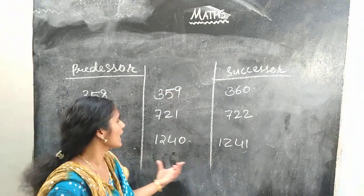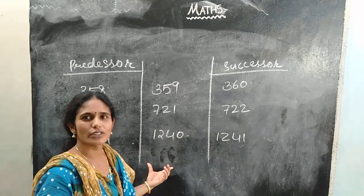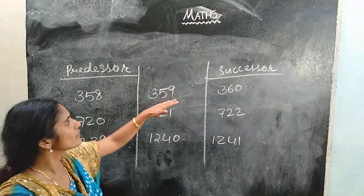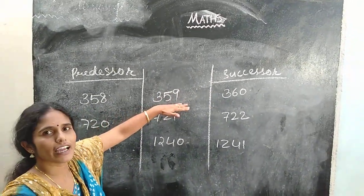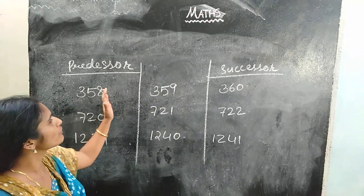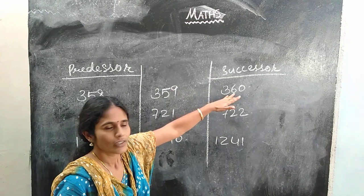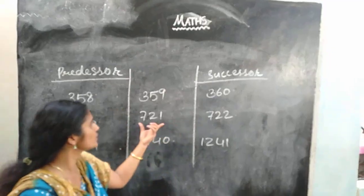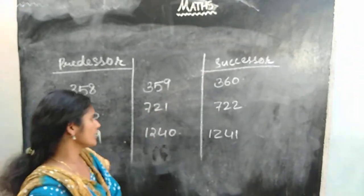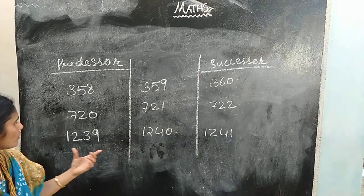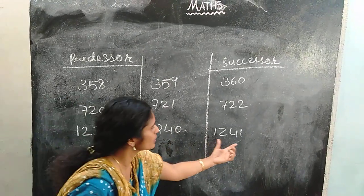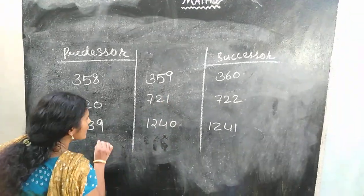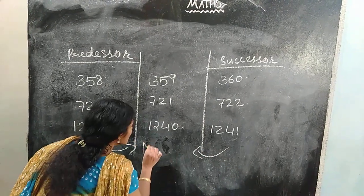From this table, we can also write the middle number. The predecessor and successor are given, and the middle number of 358 and 360 is 359. The middle number of 720 and 722 is 721. And the middle number of 1,239 and 1,241 is 1,240.